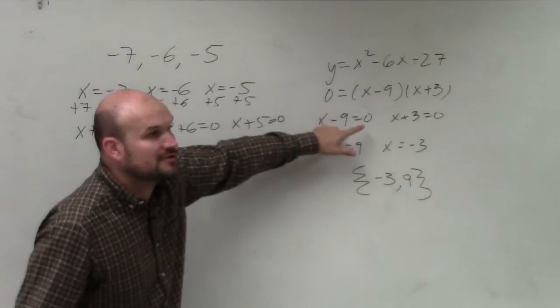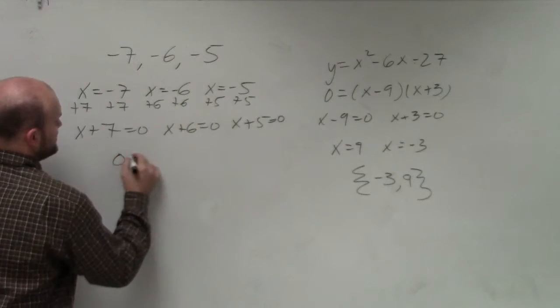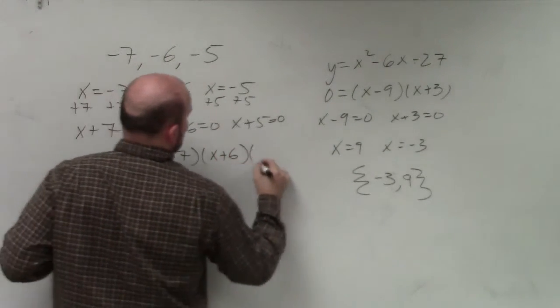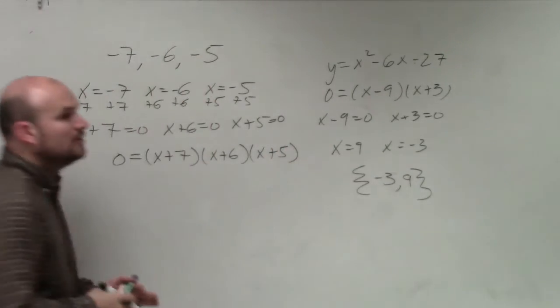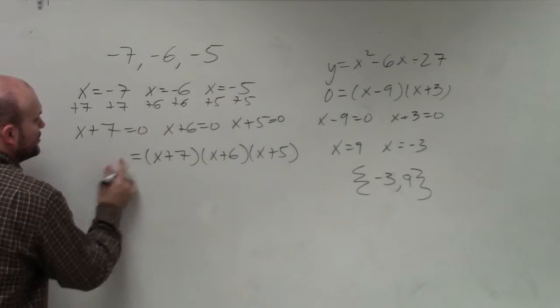that means you can multiply them all equal to 0. So therefore, 0 equals x plus 7 times x plus 6 times x plus 5. Well, ladies and gentlemen, we're not trying to set it equal to 0. We're trying to set it equal to its function or its equation.